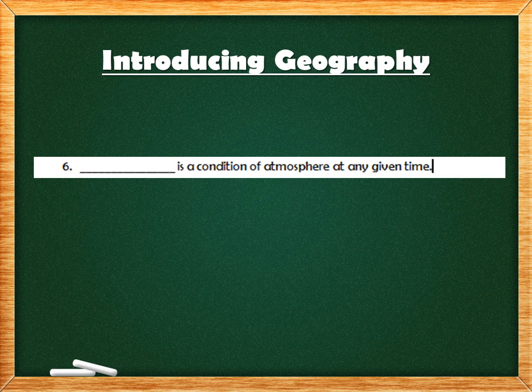Question 6: blank is the condition of atmosphere at any given time. For example, if you stand outside your home, the condition of the atmosphere is known as the weather. The answer is weather — W-E-A-T-H-E-R.